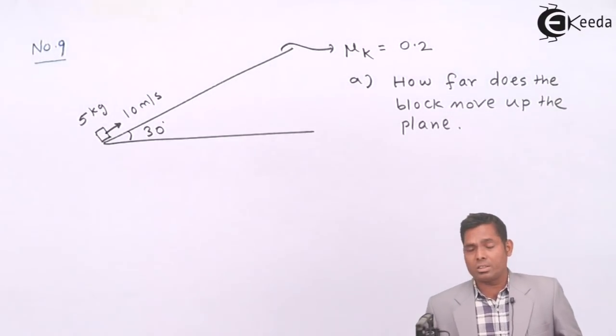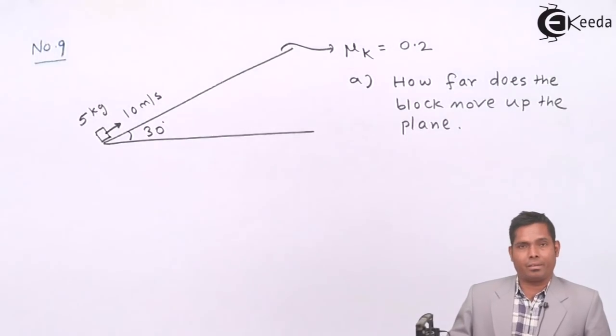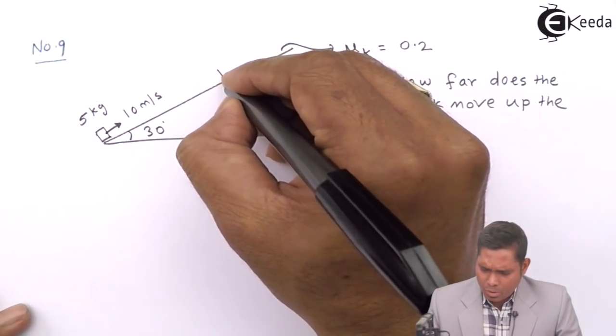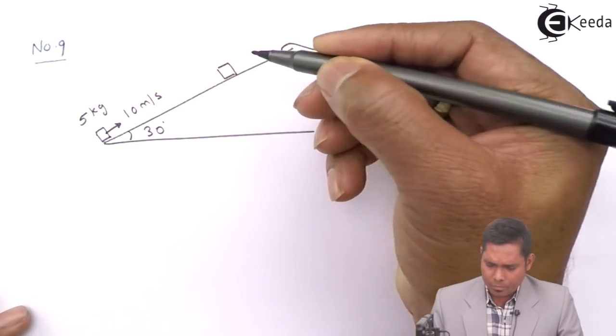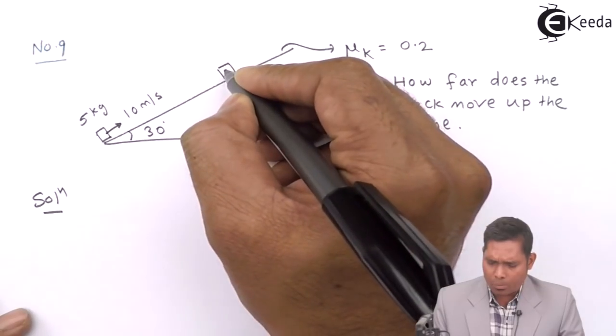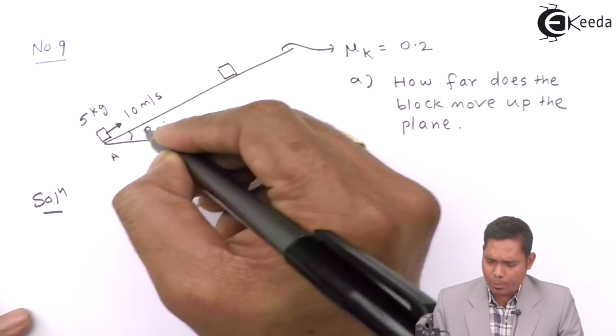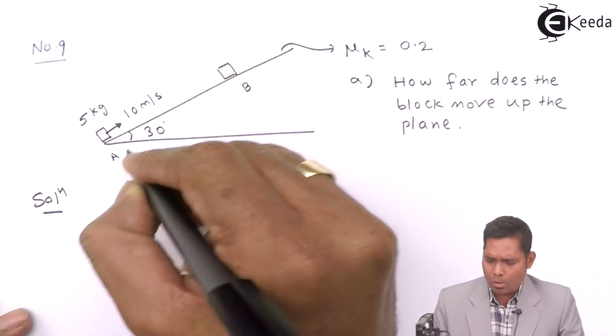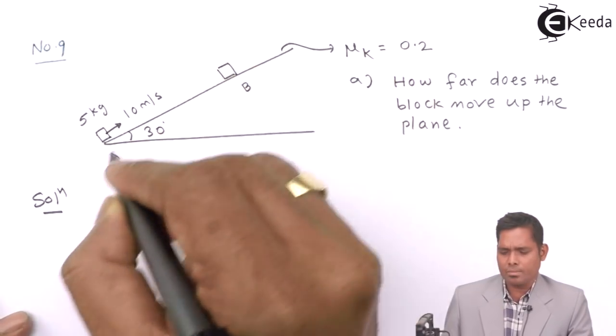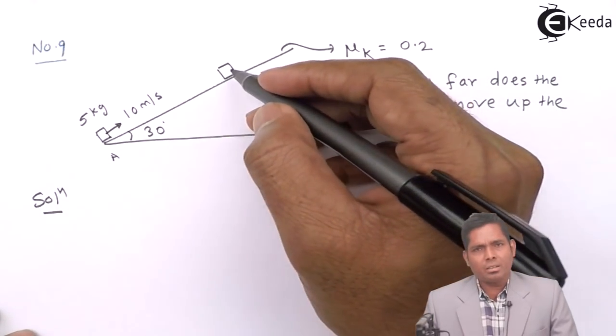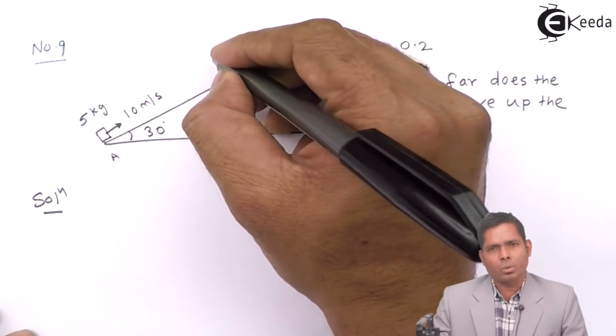Now, how far does the block move up the plane? Suppose I say that it moves up to this point. It is up to this point, and this point is supposed A, and this point is supposed B. So AB is the distance it travels. If it travels up to this point, then obviously at this point its velocity will be 0.